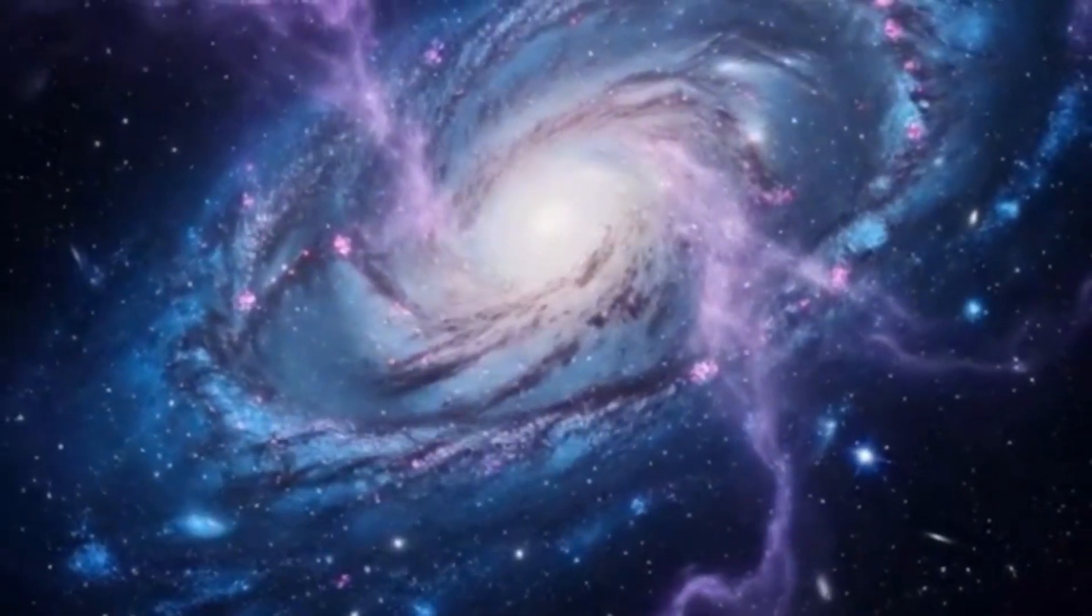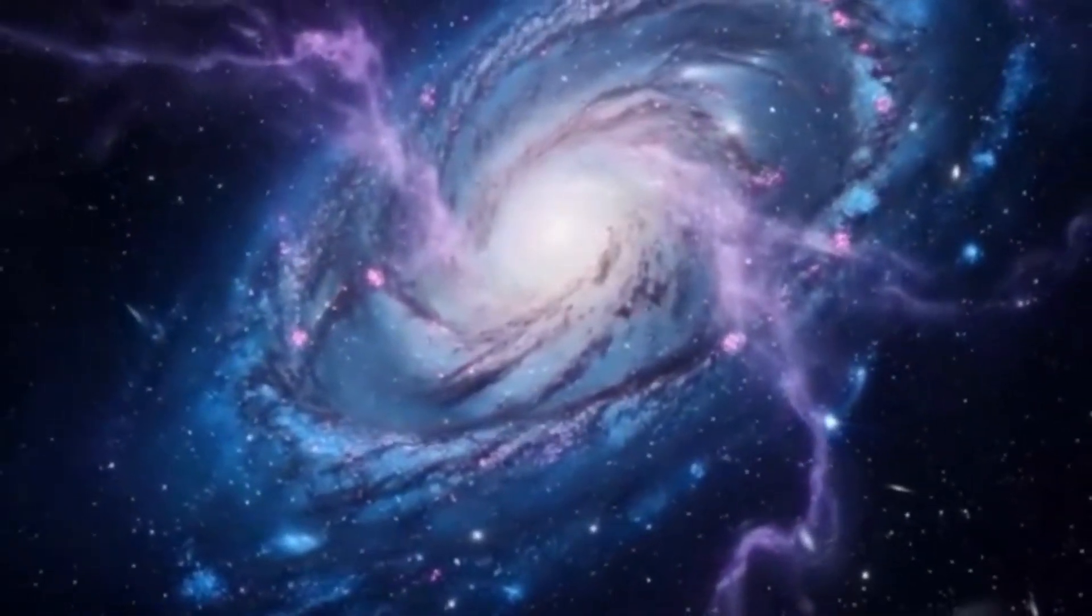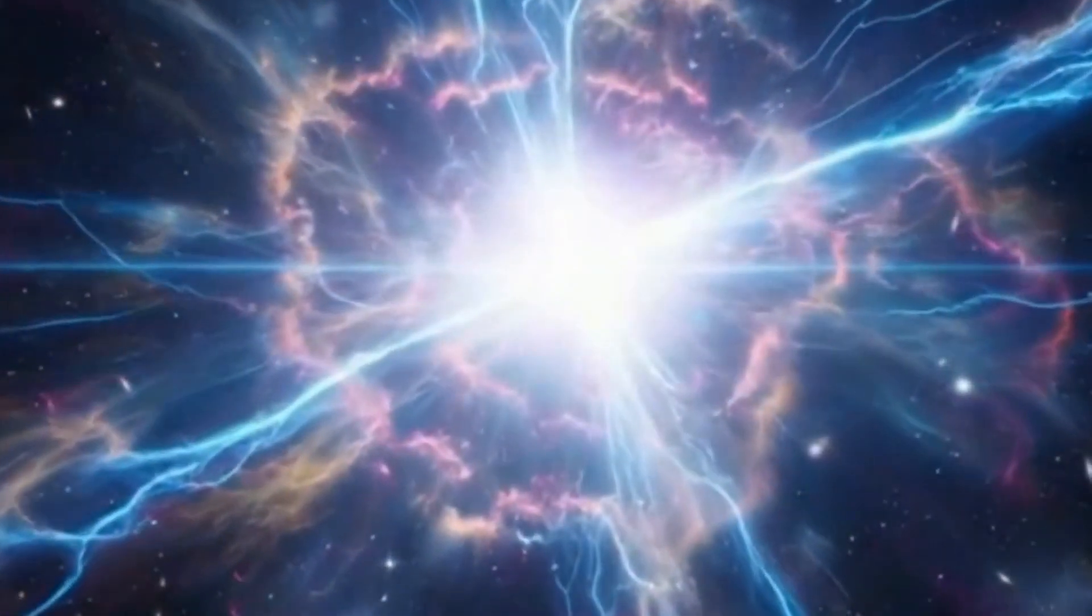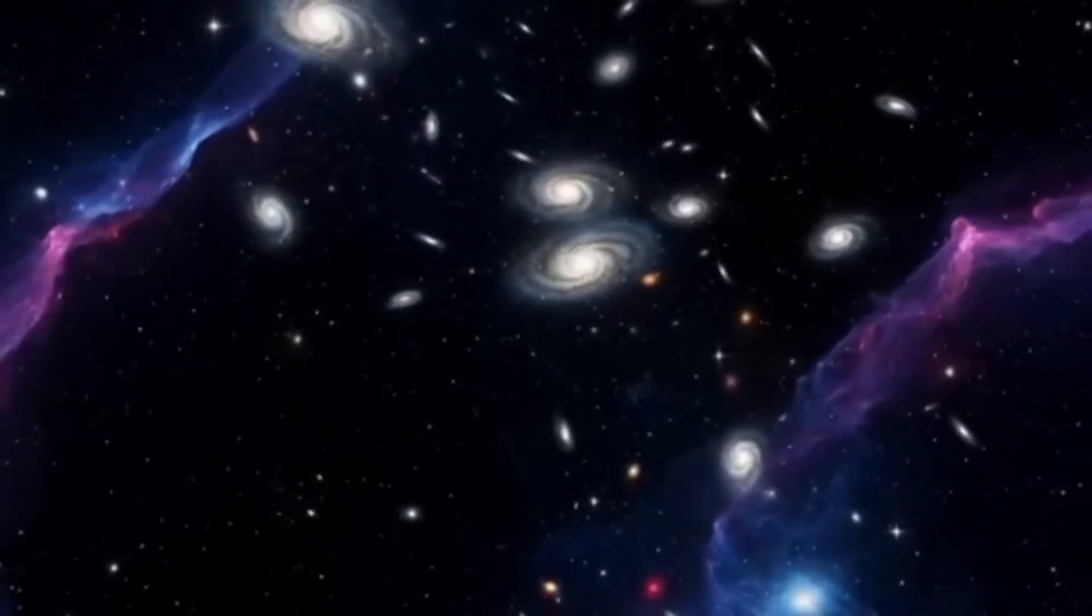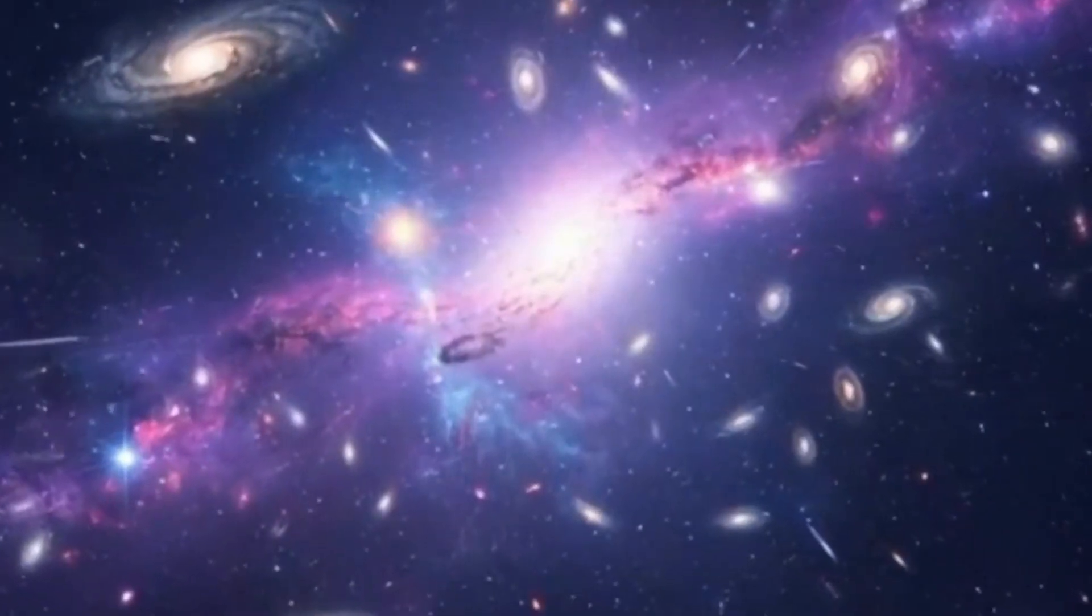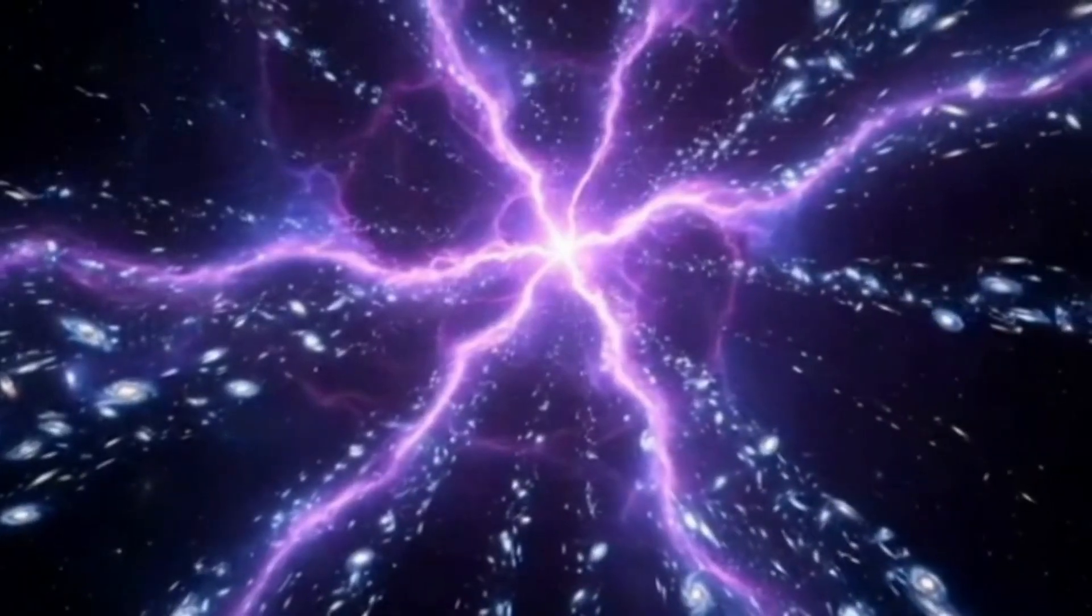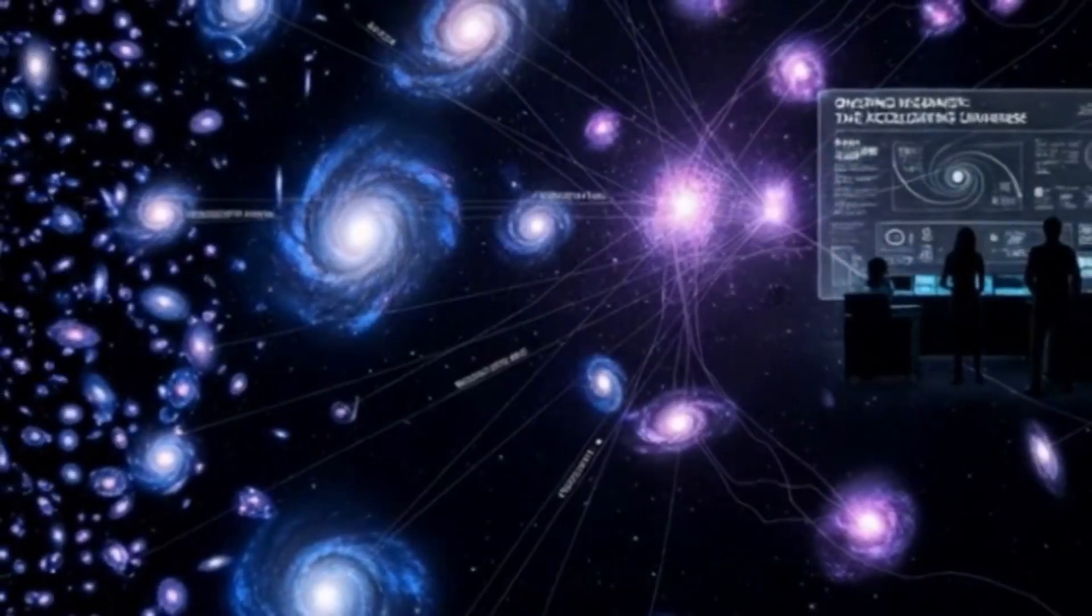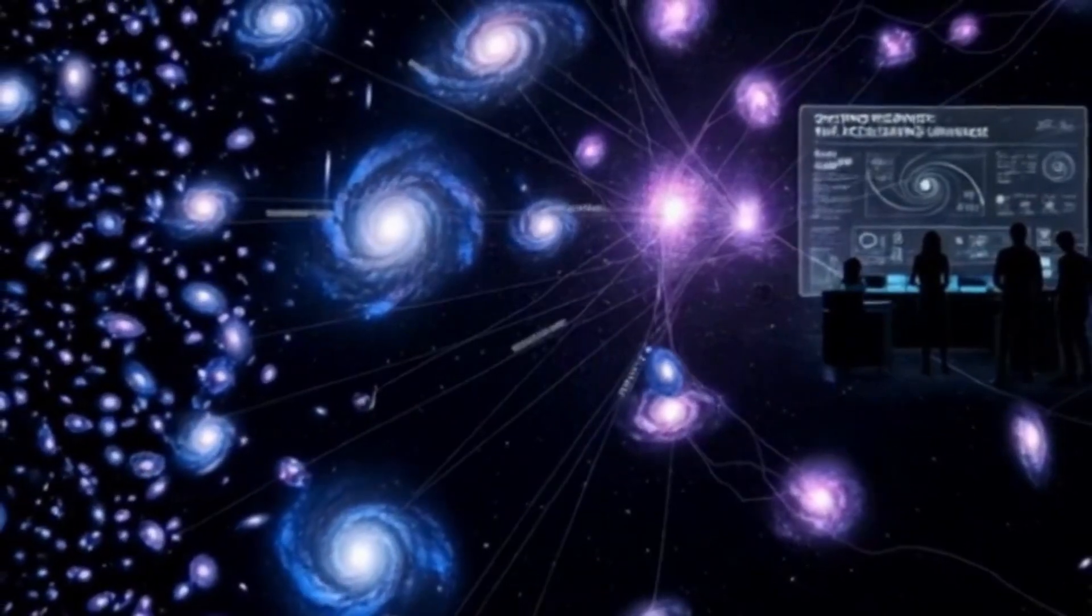Recently, the James Webb Space Telescope has detected possible evidence of these primordial black holes. Unlike the supermassive black holes we find at the centers of galaxies today, these are far smaller and far older relics from the universe's earliest moments. Their existence is deeply puzzling, because in the standard Big Bang picture, there simply wasn't enough time for black holes to form so early. But if the cyclic model is correct, these black holes could be the lingering memory of a previous universe, carried through the cosmic bounce into ours.